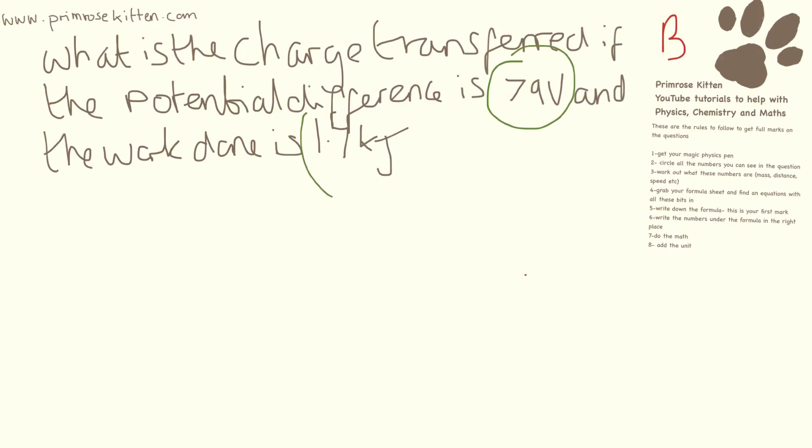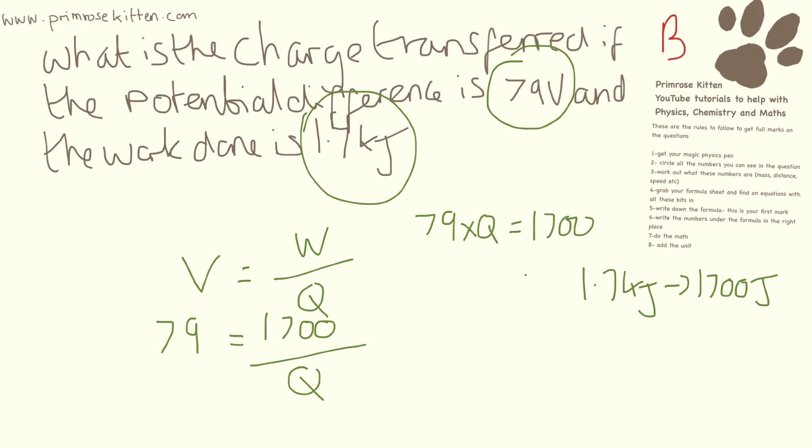So what is the charge transferred if the potential difference is 79 volts and the work done is 1.7 kilojoules? Now we have 1.7 kilojoules, we need to convert that into joules and we do that by timesing it by 1000 so that is going to give us 1,700 joules. The equation we have is V equals W over Q, we have 79 volts, we have 1,700 joules and that is going to be over Q. Now this one is slightly more complicated to rearrange than the others. We need to do 79 times by Q equals 1,700 and then we need to get Q on its own so we need to take 79 over to the other side until we actually end up with 1,700 divided by 79 which is going to give us 21.52 coulombs.